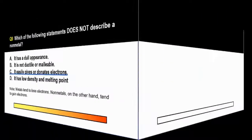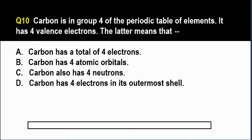And the last question. For our last question, carbon is in group 4 of the periodic table of elements. It has 4 valence electrons. The latter means that A. Carbon has a total of 4 electrons. B. Carbon has 4 atomic orbitals. C. Carbon also has 4 neutrons. And D. Carbon has 4 electrons in its outermost shell.